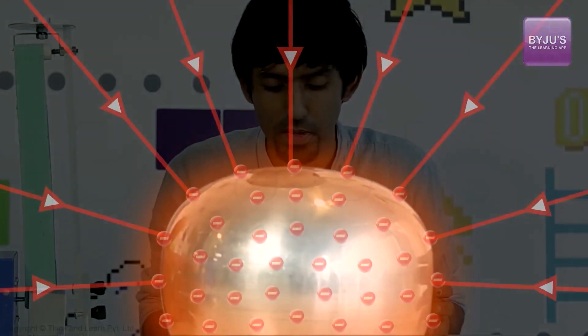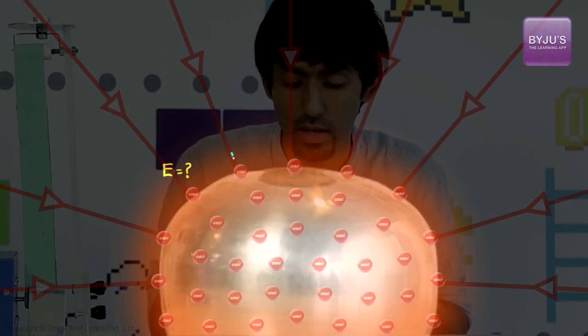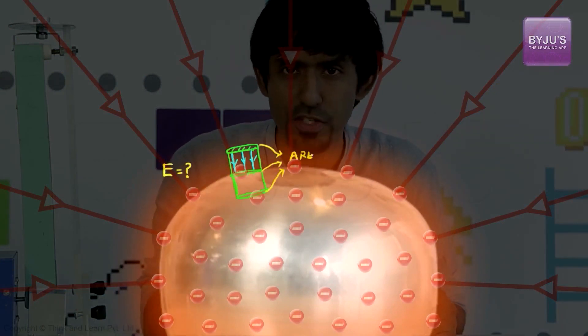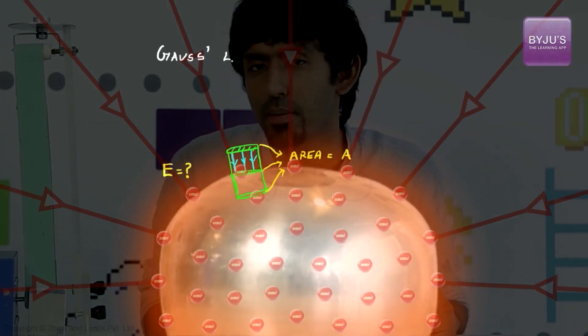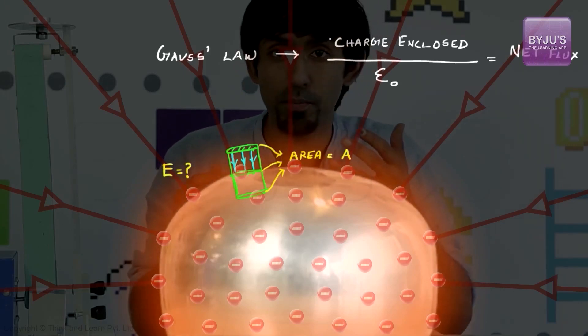To answer that question, do you remember that we calculated the electric field just outside a conductor like this? What did we use? We used Gauss law. We draw a Gaussian surface, partially inside and partially outside, and use Gauss law, which is charge enclosed by epsilon naught equals the net flux.